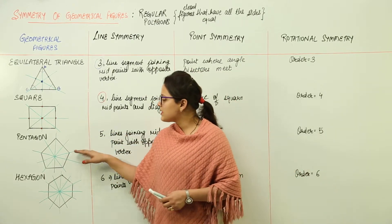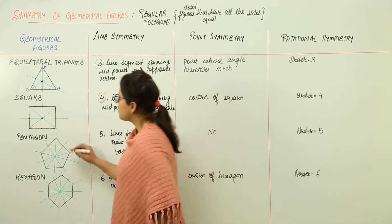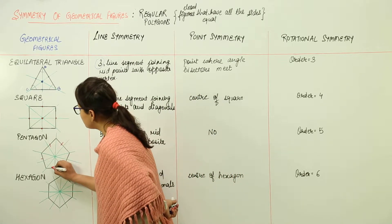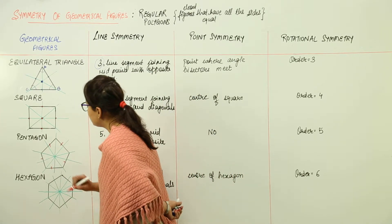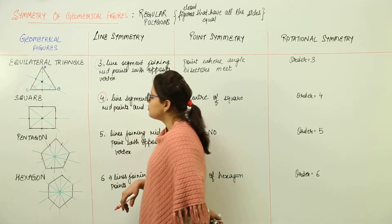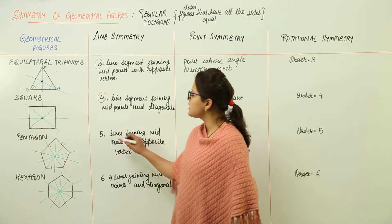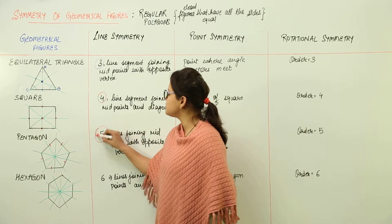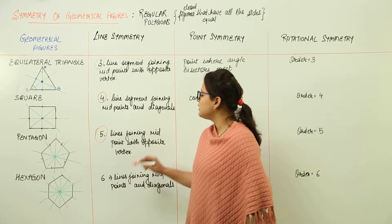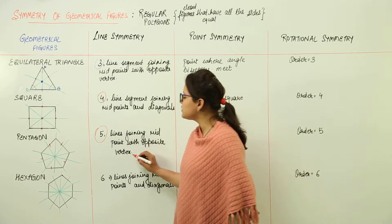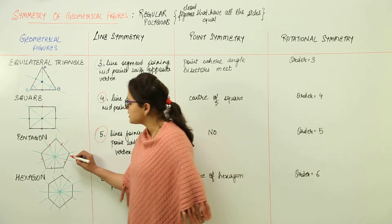Next we have the pentagon. A pentagon has all 5 sides equal to each other. So what will be the line symmetry? It has 5 lines of symmetry, formed by the lines joining the midpoints of each side with the opposite vertex.